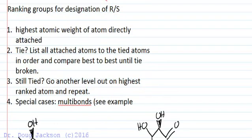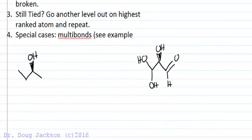The highest atomic weight of the atom directly attached. And if there's a tie, we list all attached atoms to those tied atoms in order and compare the best to best until a tie is broken. If we're still tied, we go one more level out on our best atom and then we repeat. And let's look at a couple of examples to help deal with this.